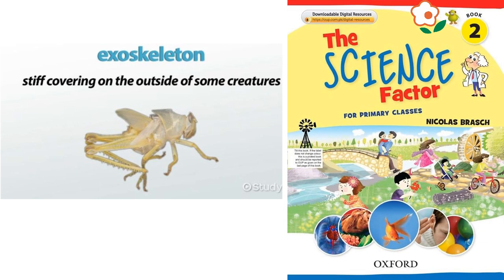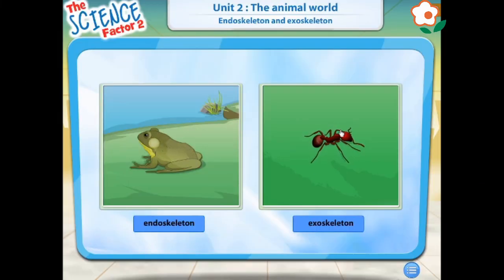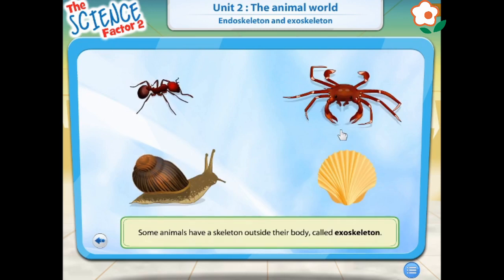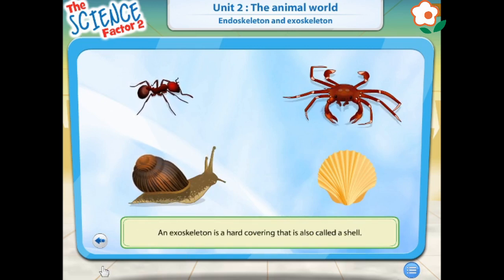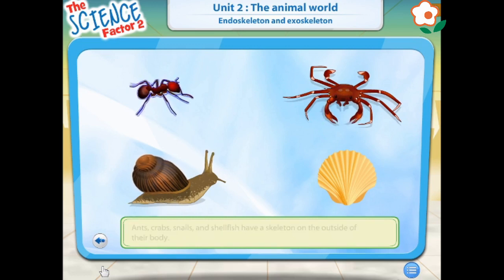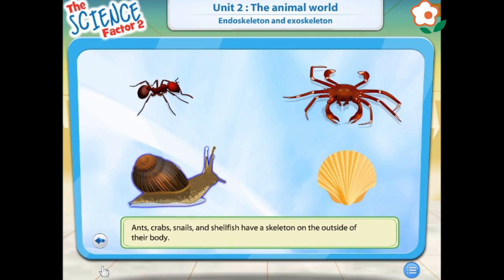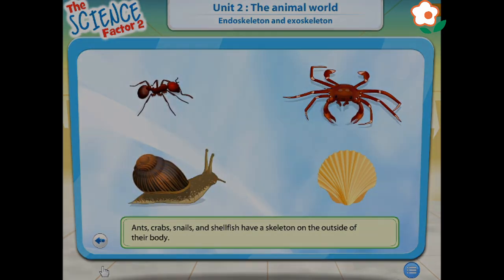Exoskeleton. Some animals have a skeleton outside their body called exoskeleton. An exoskeleton is a hard covering that is also called a shell. It supports and protects the bodies of some types of animals. Ants, crabs, snails and shellfish have a skeleton on the outside of their body.